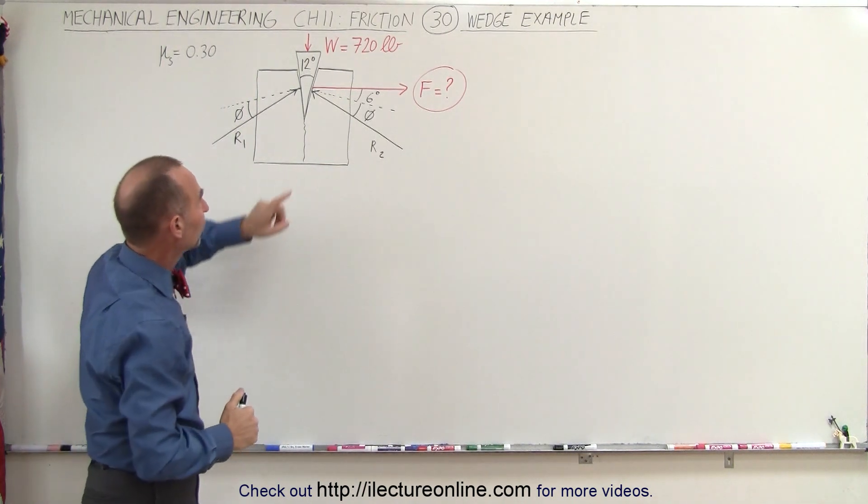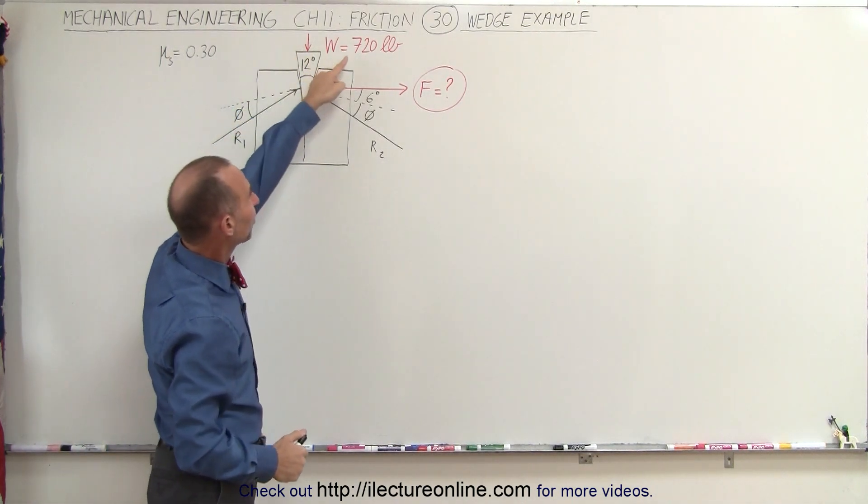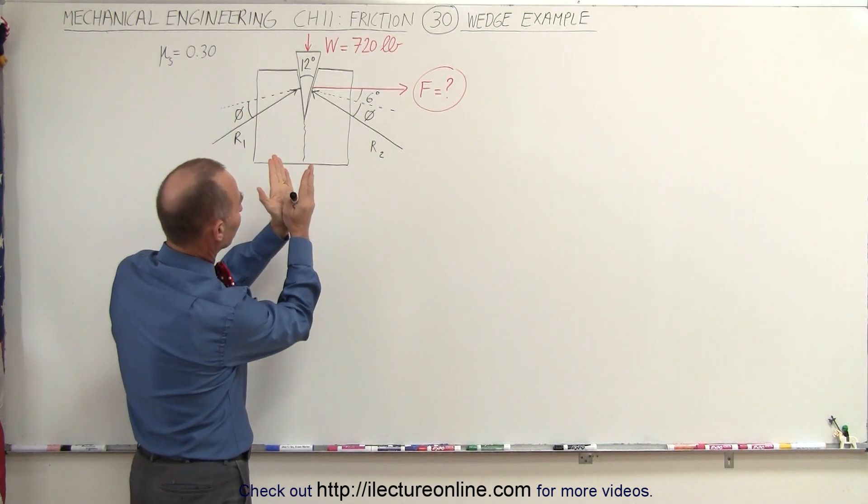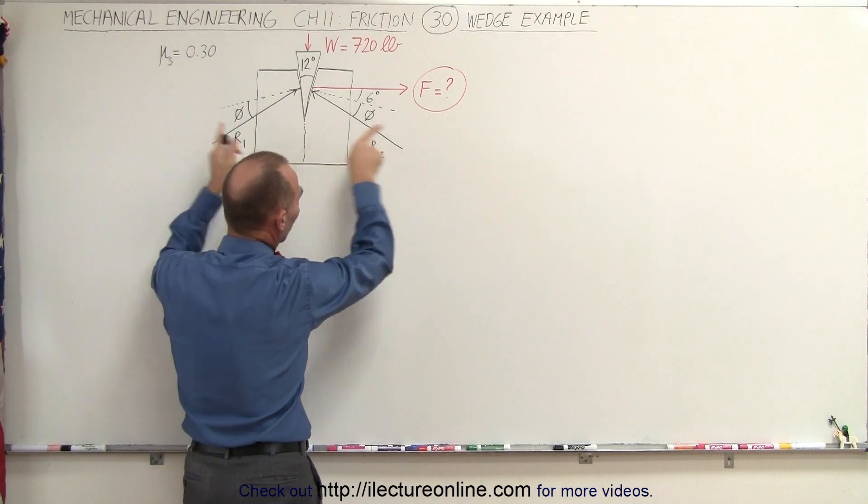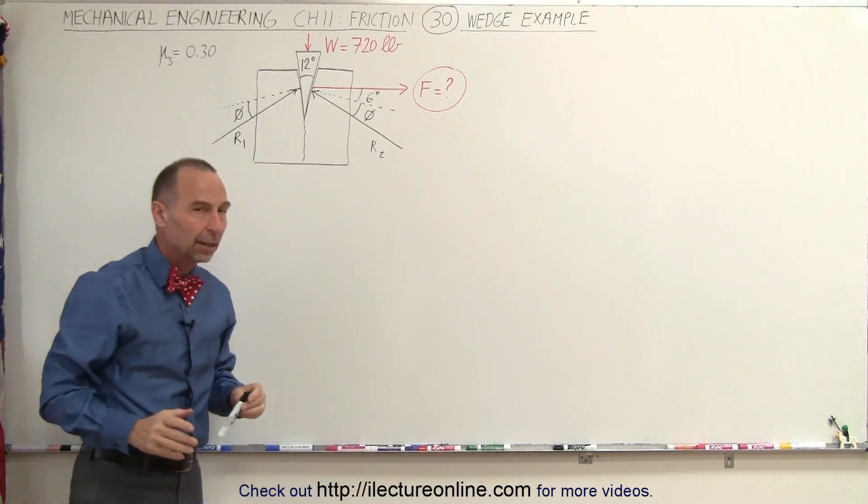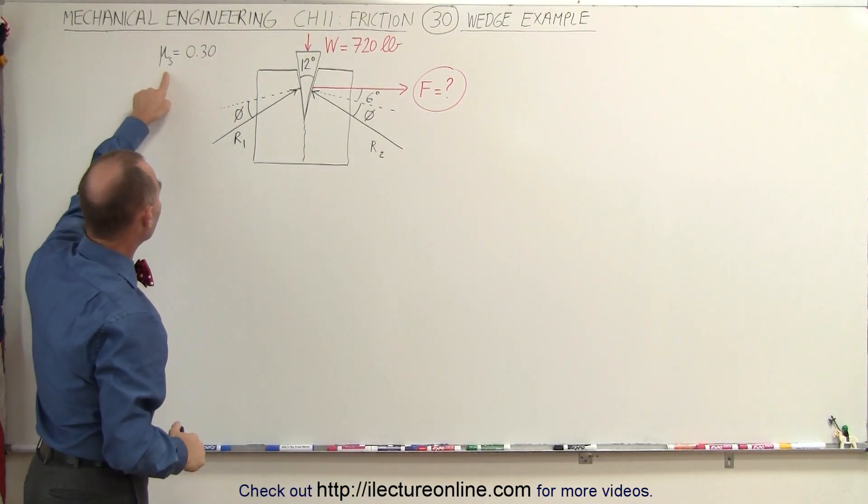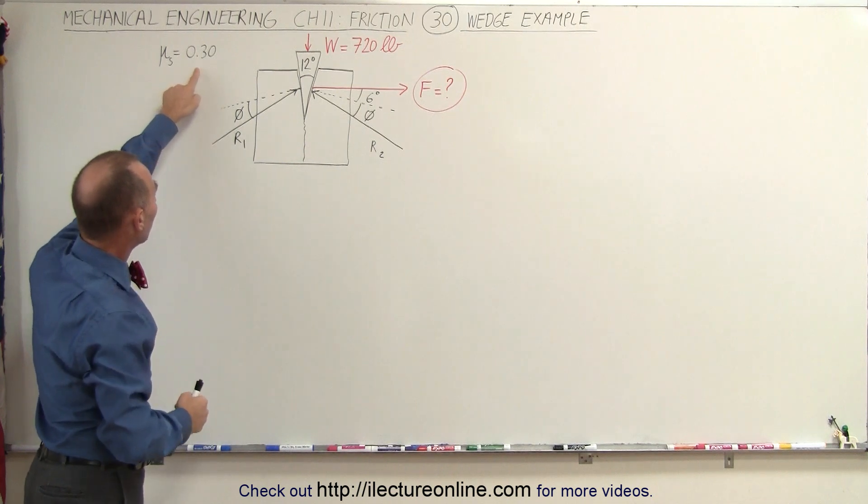The question is, if we're applying a force of 720 pounds down on the wedge, which has an angle of 12 degrees, what will be the force against the wood in a horizontal direction? We know that the coefficient of static friction between the wedge and the wood is 0.3.